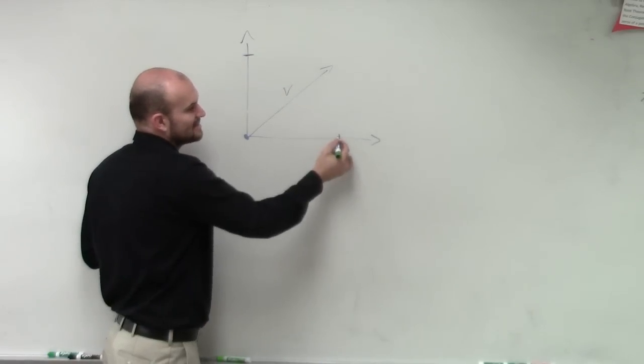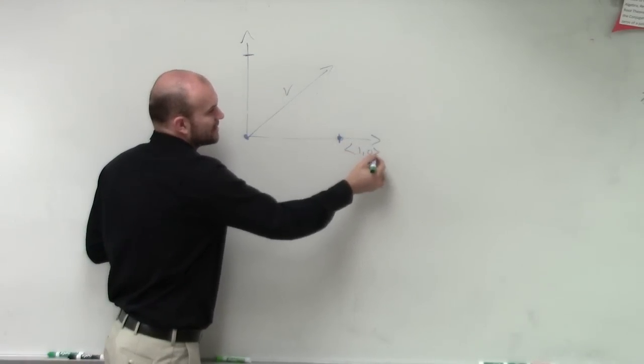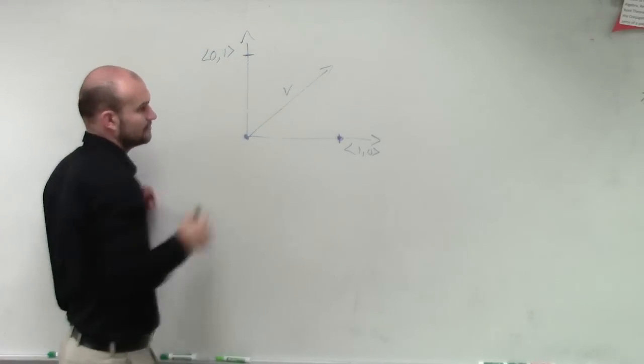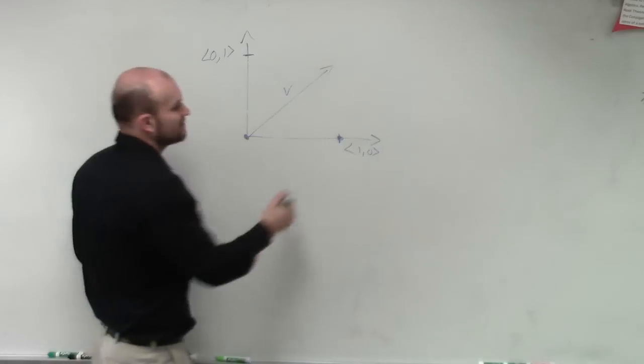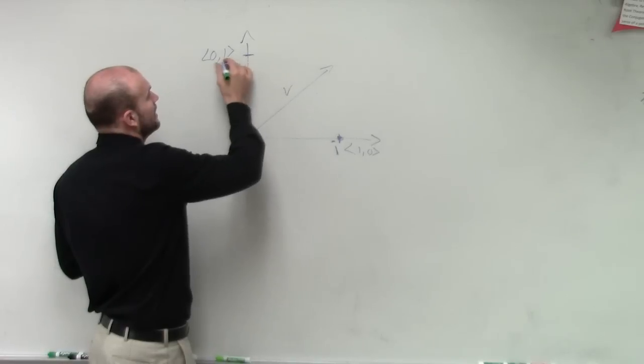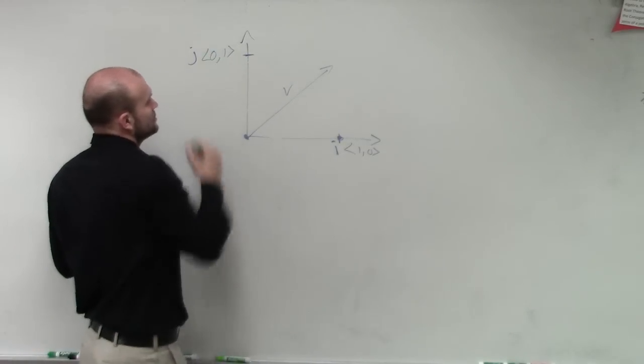And let's say, at the point 1 comma 0, and at the point 0 comma 1, we have two little friends. My first friend is vector i, and the next one is vector j.